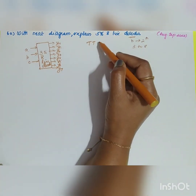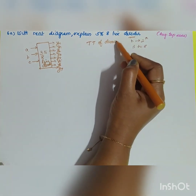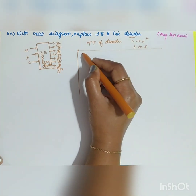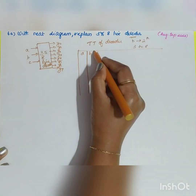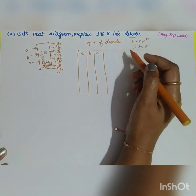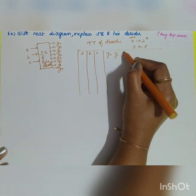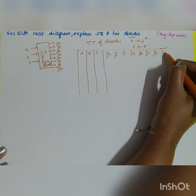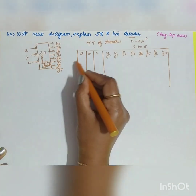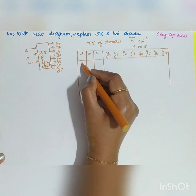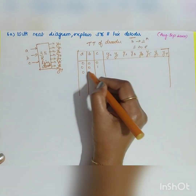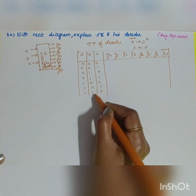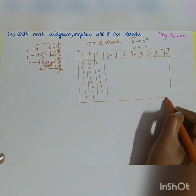The truth table of a 3-to-8 line decoder consists of inputs A, B, C and outputs Y0 through Y7. With 3 bits, the input combinations are: 000, 001, 010, 011, 100, 101, 110, and 111.